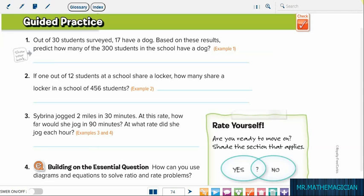Hello everyone, welcome to my math channel. This is Course Number 1, Chapter 1, Lesson 7, and the Guided Practice. If you have your books, please open to page 74. Problem number 1: Out of 30 students surveyed, 17 have a dog. Based on these results, predict how many of the 300 students in the school have a dog.